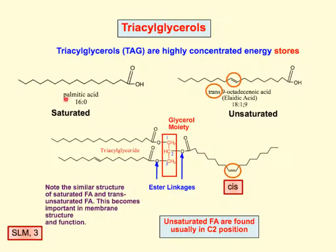To review the numbering system: the first number tells you how many carbons there are, and the second number tells you how many double bonds. Over here we have 3 numbers — so there are 18 carbons on this trans-9 octadecanoic acid: 18 carbons, 1 double bond, at the 9th position. Trans means these two bonds are trans from each other — this one's coming down, this one's going up. Whereas right here, this one's cis — they're both going up away from the double bond.